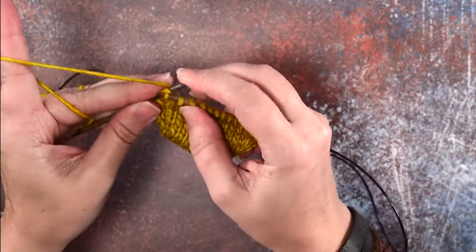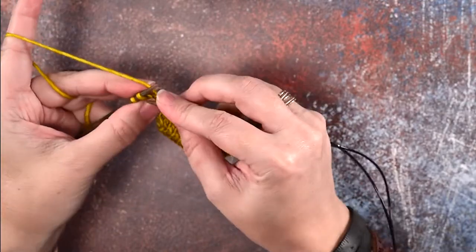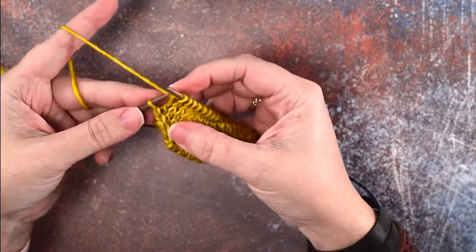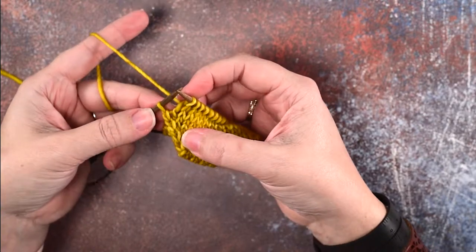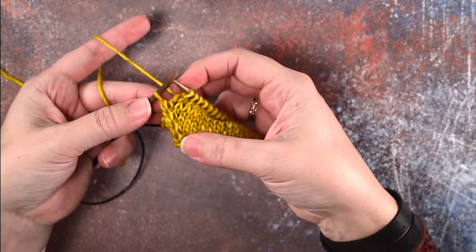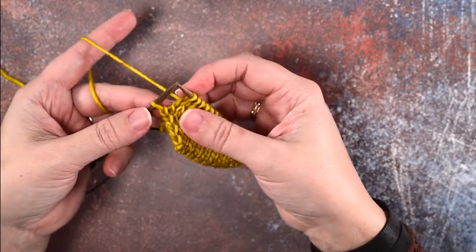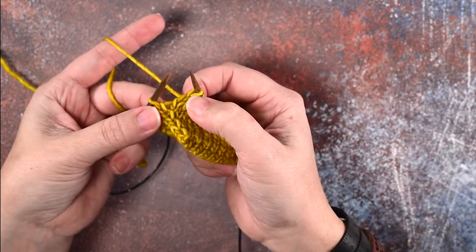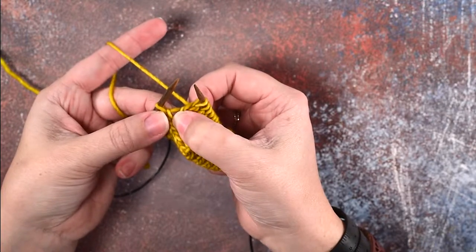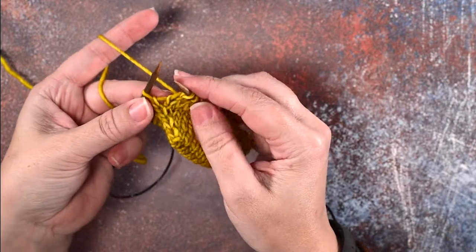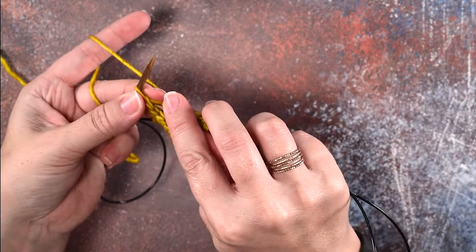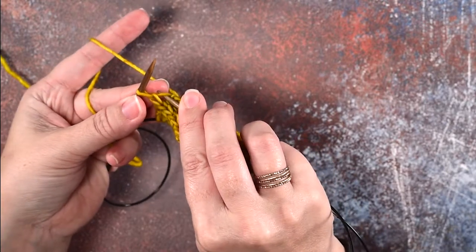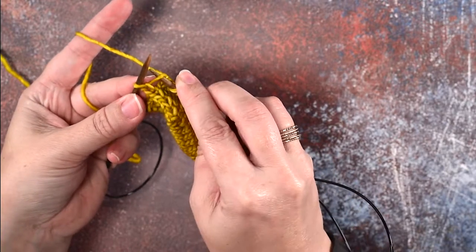Okay, so I'm gonna work over to where I'm gonna place the make one right. I'm gonna place it before I get to the last stitch on my needle. To make one right, we're gonna locate the bar between these two stitches which is right here. We're gonna use our right needle and insert that needle tip through the front and pick up that bar.